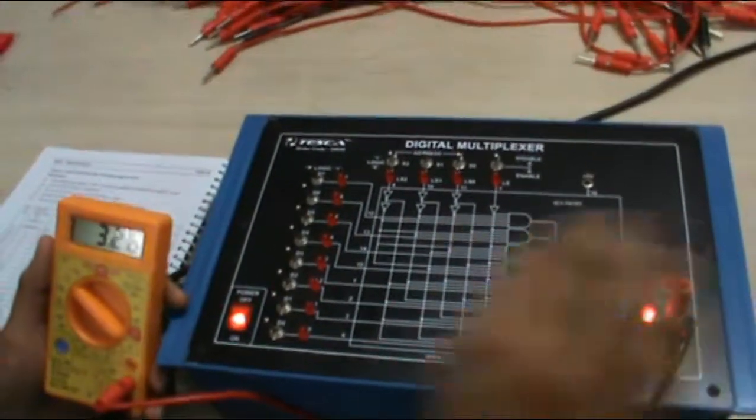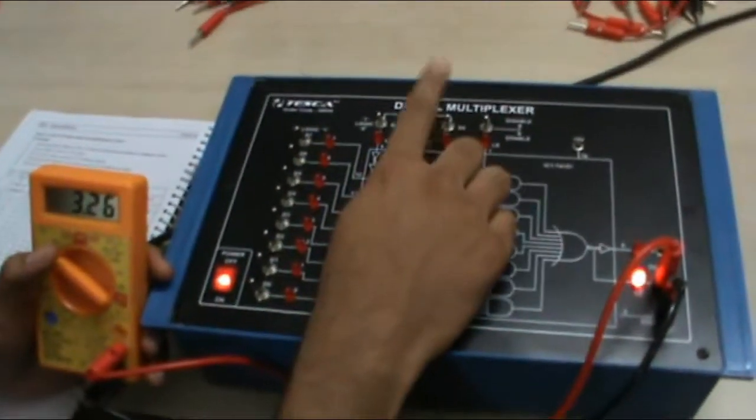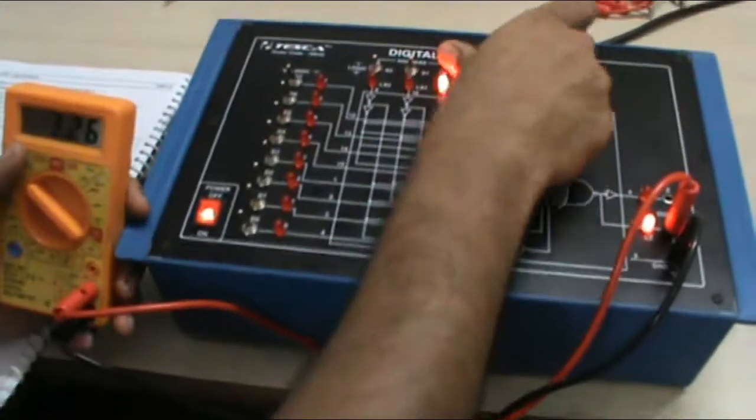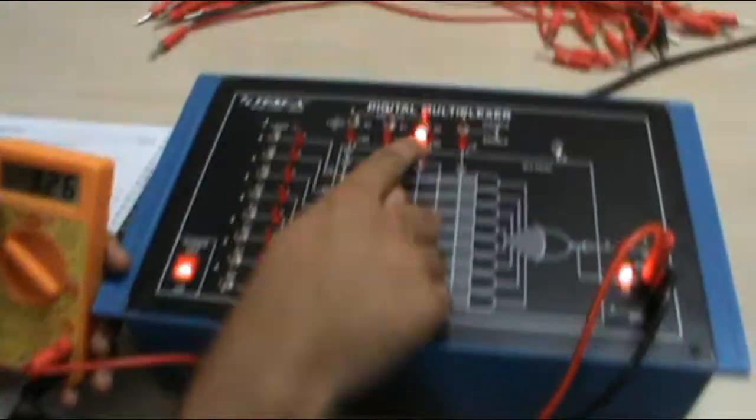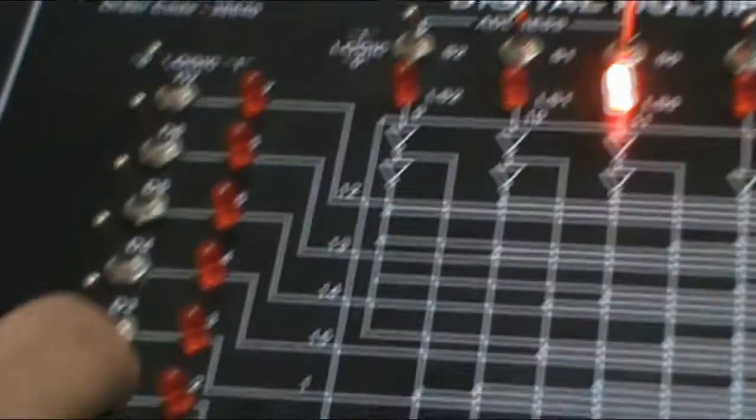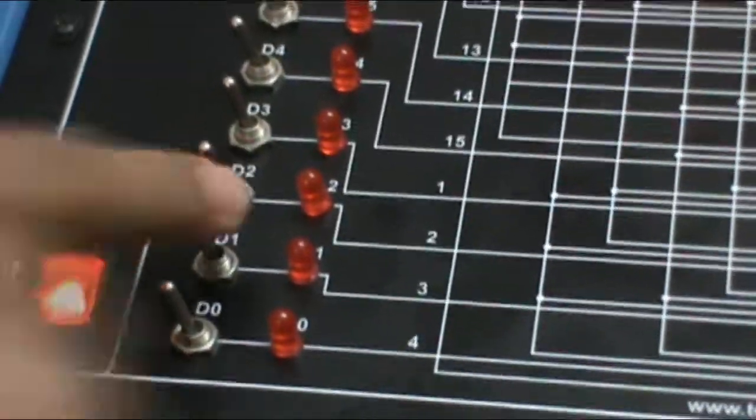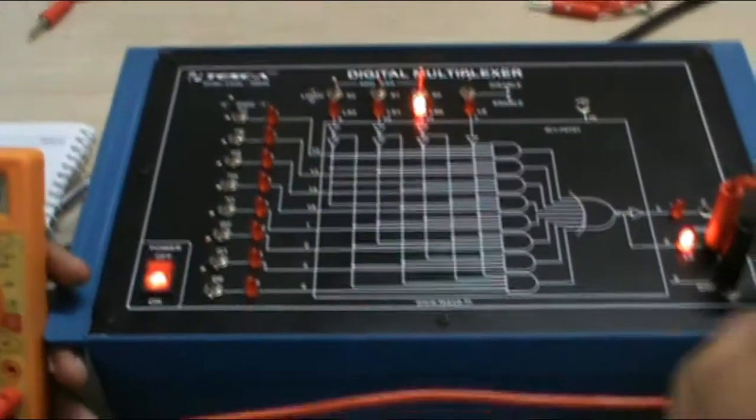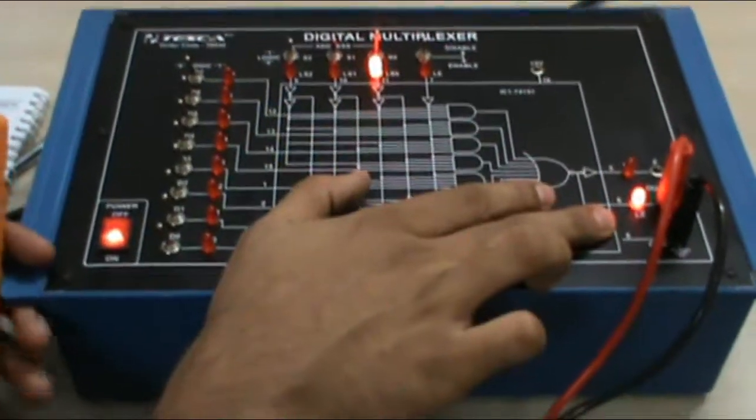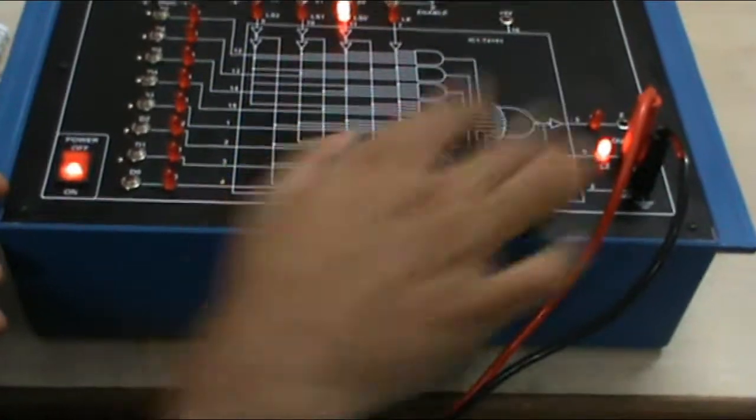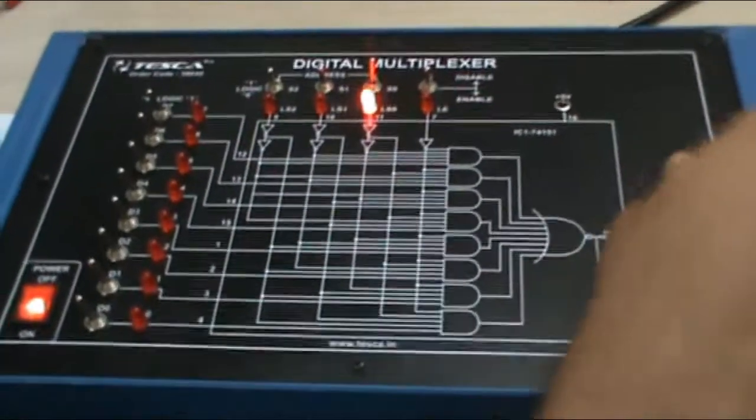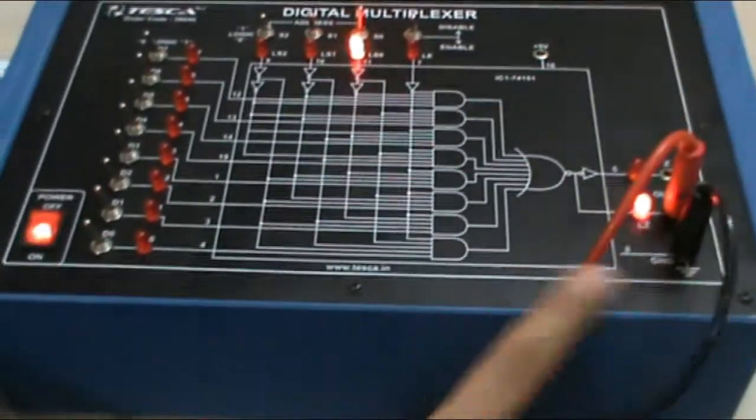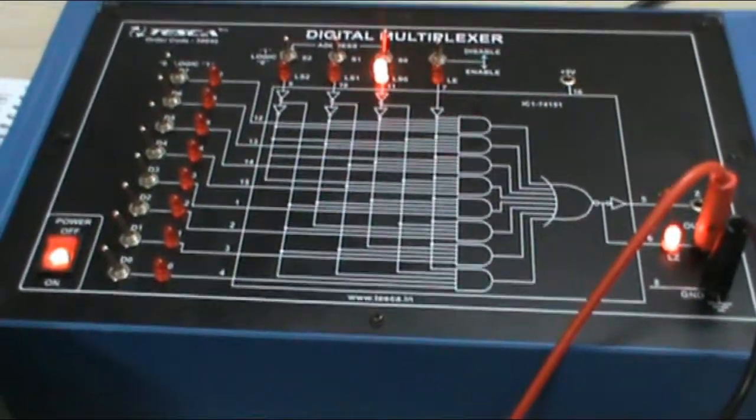Now the same experiment we have to perform for select 1. I give address lines to 0 0 1. For 0 0 1 I select my D1 line. My D1 line first 0 position. I will see the value LEDs of LZ and LZ bar. It is 0 and this is 1. Now I will measure the voltage of LZ which is 0.15V and the voltage of LZ bar as you can see which is 3.26V.